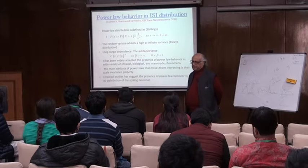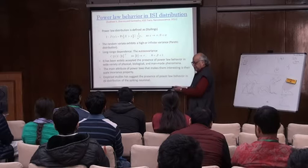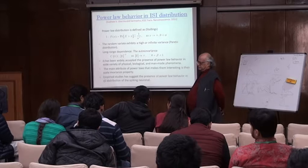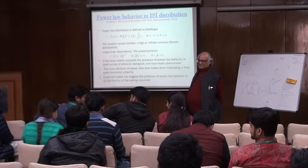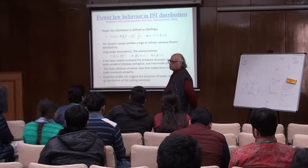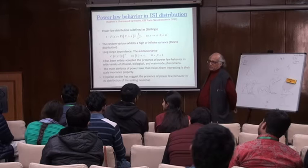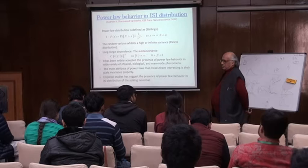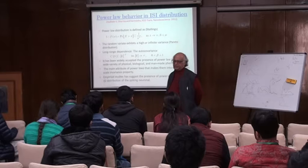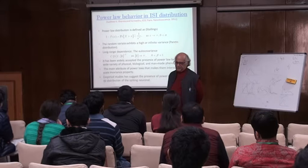Why does power law come? There are some distributions which are not power law, like human height, which follows a normal distribution. Normal distribution is e to the power minus x squared — it tapers very fast. It means you can never find a person of twice your height. But you must have seen persons who are earning 3,000 times your income. So that is a power law — there is a finite probability of finding a person earning 30,000 times your income.